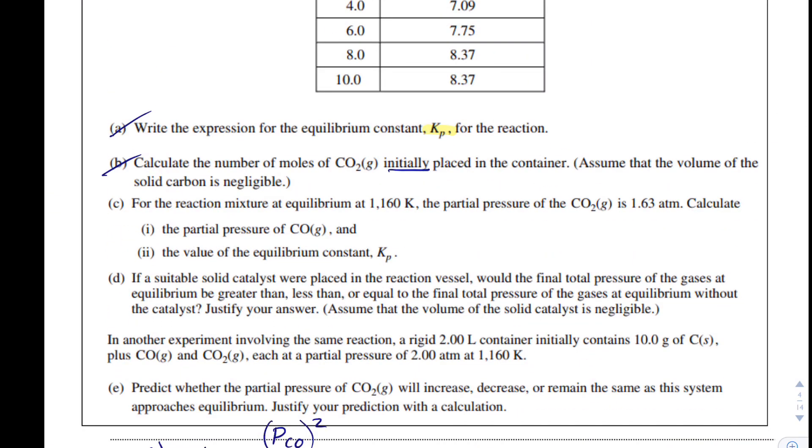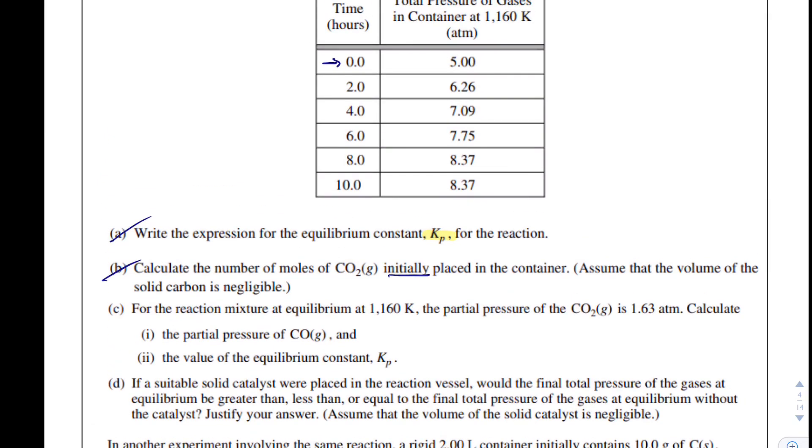In part C, we've got two parts, part 1 and part 2, so I anticipate them to be related to each other. For the reaction mixture at equilibrium, at 1,160 Kelvin, the partial pressure of CO2 is found to be 1.63 ATMs. Calculate the partial pressure of CO.